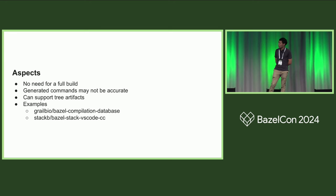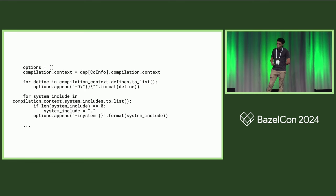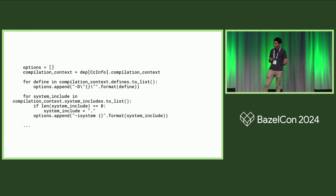The final approach is using Bazel aspects. Using aspects also does not require a full build, but the generated commands in the database may not be exactly the same as the actual commands. It is possible to write an aspect to support extracting commands from actions involving tree artifacts. This code snippet, taken from the Grail Bio Bazel compilation database project, is an example of how some projects extract compile commands using aspects — basically iterating on what's available in the compilation context and reconstructing the compile commands. However, if you're using a custom toolchain, the order or format of the flags can be different.